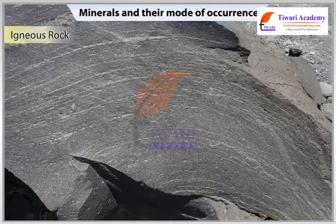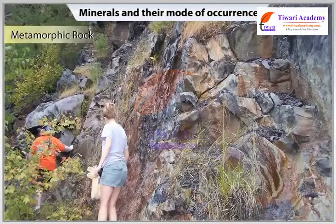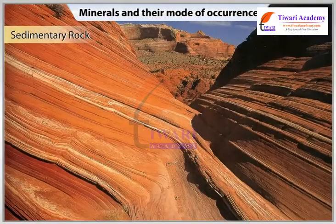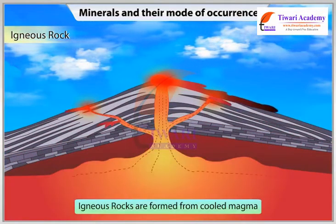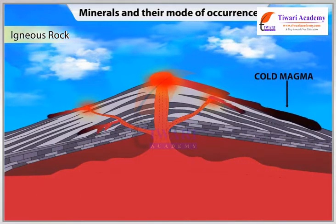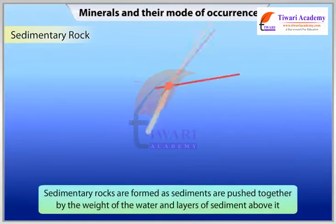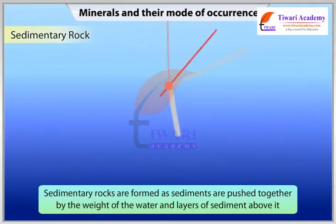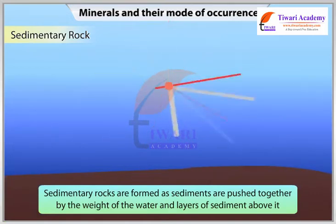Some minerals are formed by the process of precipitation from a solution and some are formed by solidification of a melt. We have already studied about how igneous, metamorphic and sedimentary rocks are formed. Igneous rocks are formed from cooled magma. Magma is melted rock deep inside the earth. Magma on the crust is called molten lava. Sedimentary rocks are formed as sediments are pushed together or cemented by the weight of the water and layers of sediment above it.